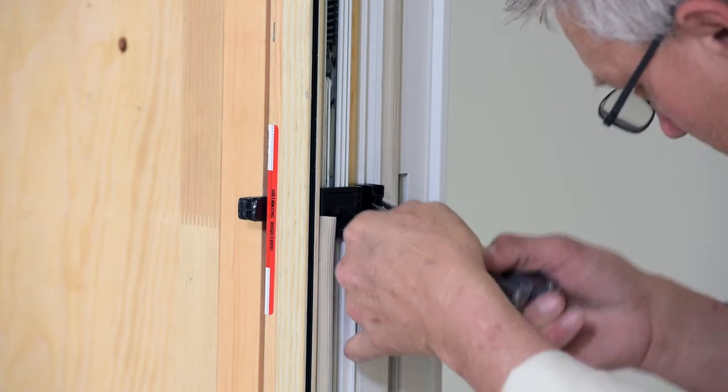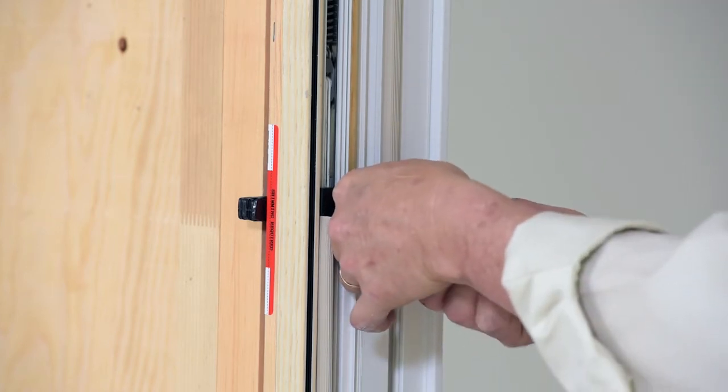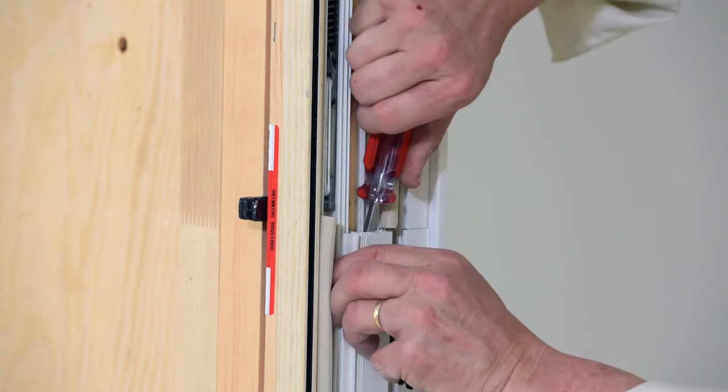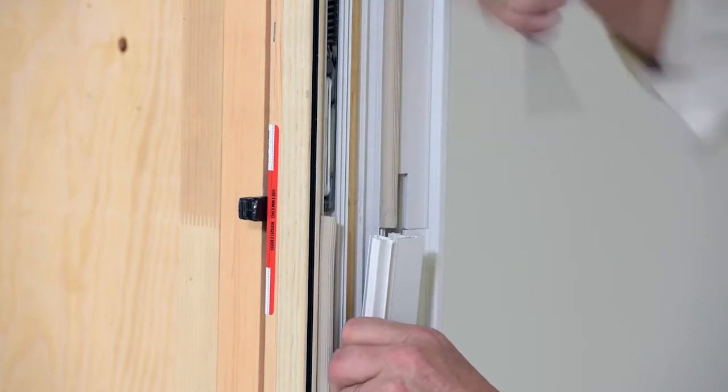Using pliers, remove the jam receiver assembly. Using a screwdriver, pry behind the aluminum vinyl mid-cover assembly to release it from the frame.